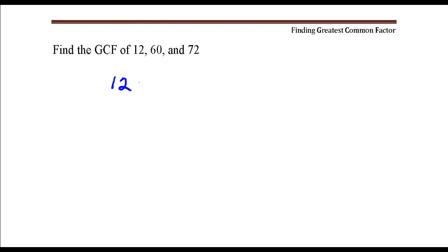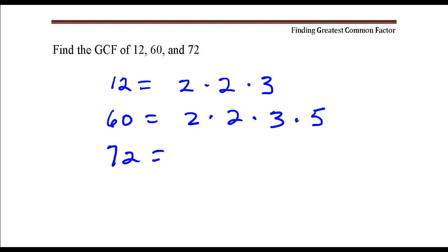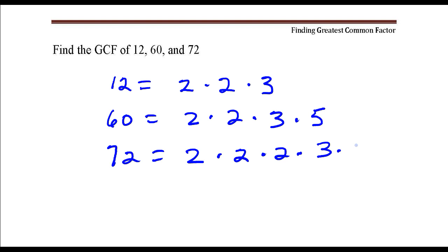Let's first write the prime factorization of each number. 12 is 2 times 2 times 3. 60 is 2 times 2 times 3 times 5. 72 is 2 times 2 times 2 times 3 times 3.